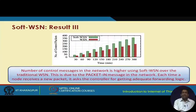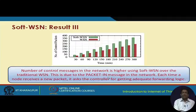The third result shows the number of control packets forwarded in the network. The number of control packets is higher using the proposed SoftWSN protocol compared to traditional WSN. This is because each time a node receives a new packet it requests forwarding logic from the controller, which is why the number of control messages in the network gets reduced over time.